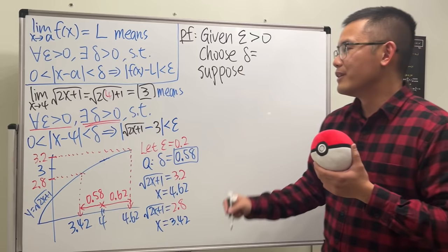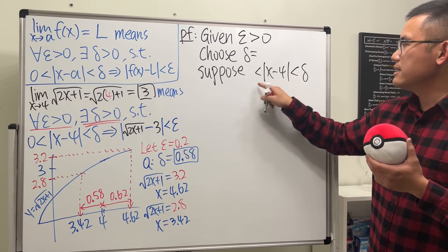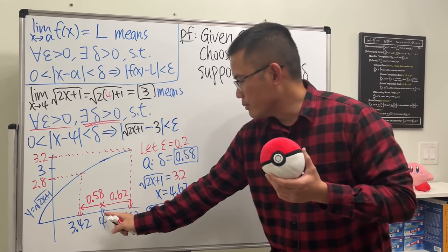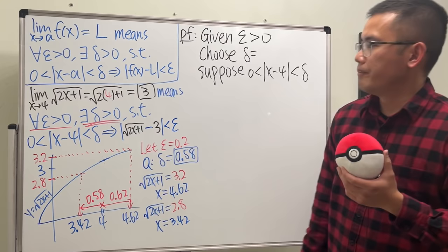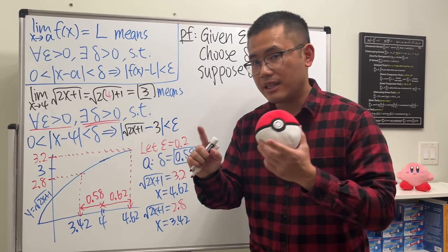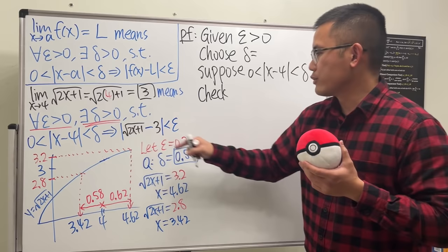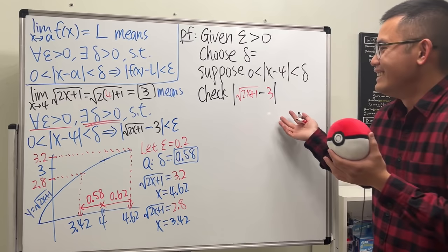Third keyword: 'such that' — we want the condition to be useful, so we write 'Suppose' this condition is true: the absolute value of x minus 4 is less than delta, meaning x does not equal 4. Fourth keyword: we want to verify the conclusion actually holds, so we write 'Check' — write the absolute value of sqrt(2x+1) minus 3, and do not just write 'less than epsilon' yet because we haven't done any work.